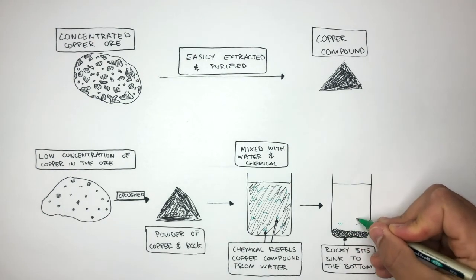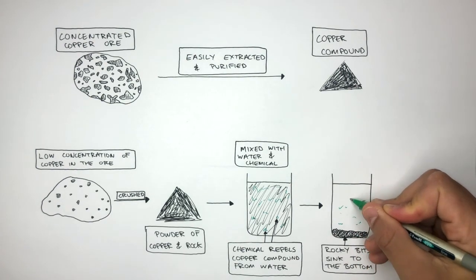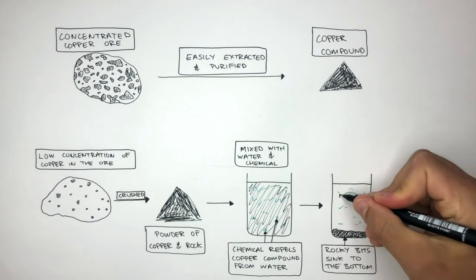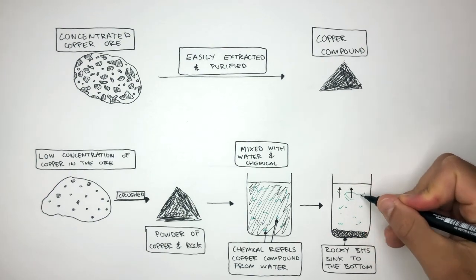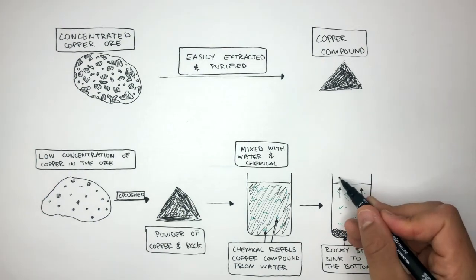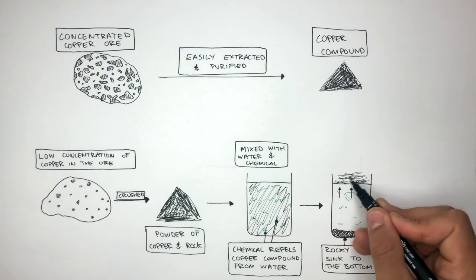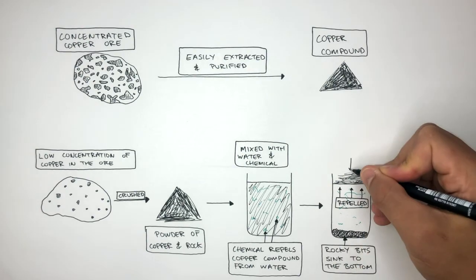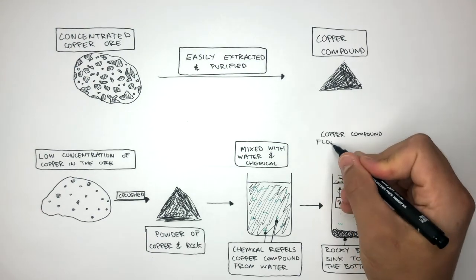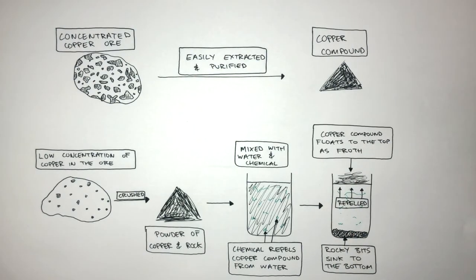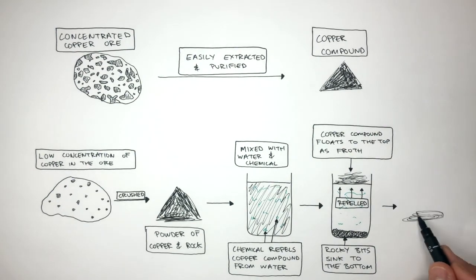And this chemical has caused the copper compound to be repelled by the water, forcing the copper compound to move upwards, forming a froth of copper on the surface of the water. So the copper compound has been repelled where the copper compound floats to the top as a froth. In the final stage, we now have the froth of copper compound, which was once in a low concentration in the ore. The froth of copper compound is scraped off the top.